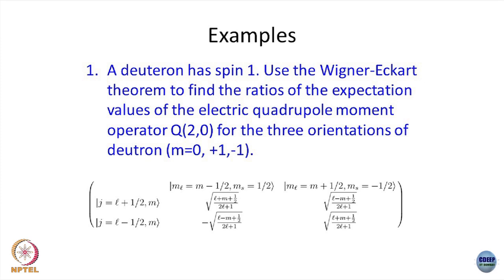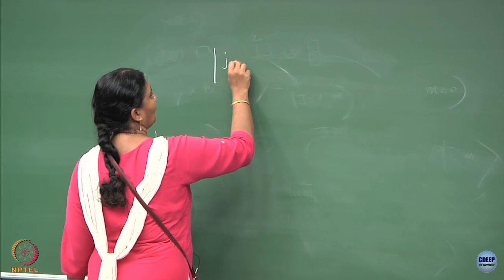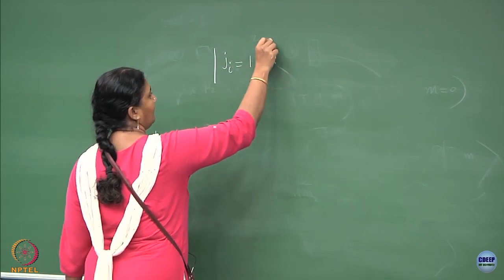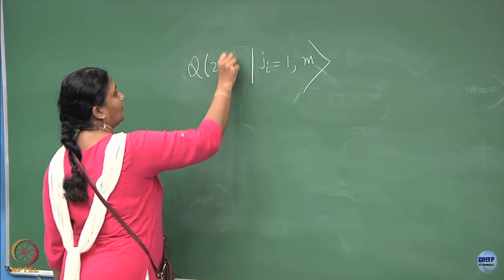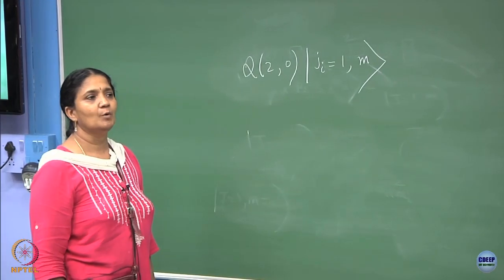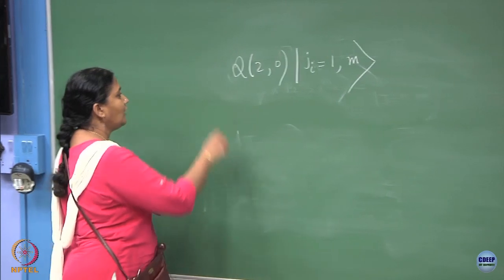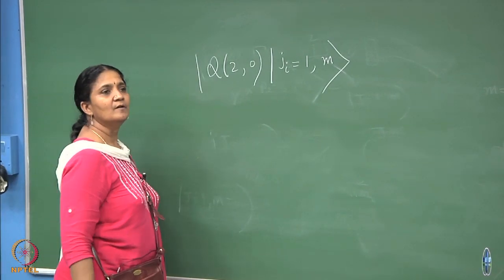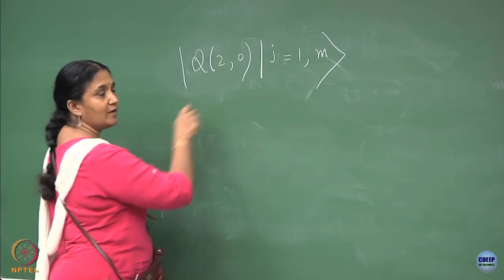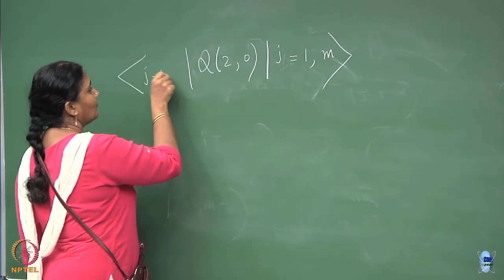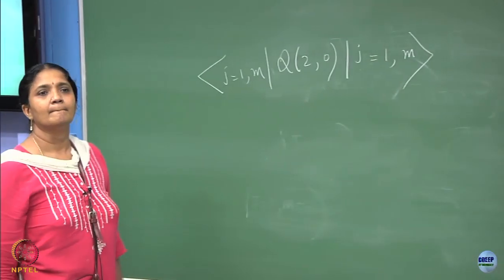How do you go about this? The deuteron is given to you as J initial equal to 1, state |J=1, m⟩, and you have an operator which is the quadrupole moment tensor operator, and you are asked to find the expectation value. Expectation value means it is the same state. So I can write ⟨J=1, m| Q |J=1, m⟩.